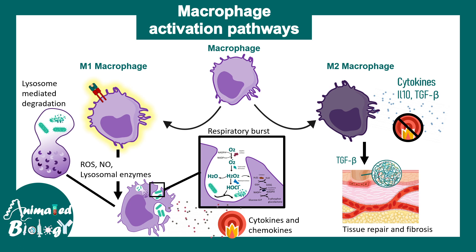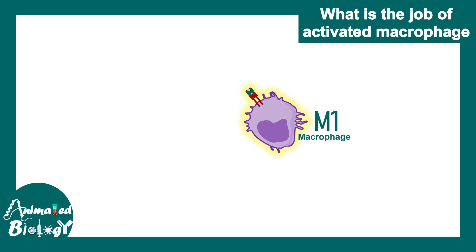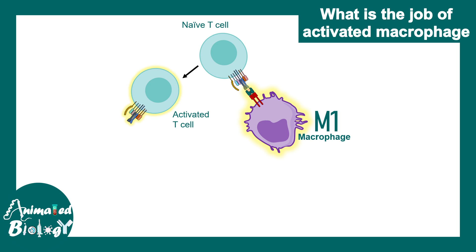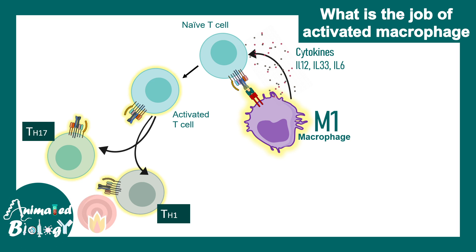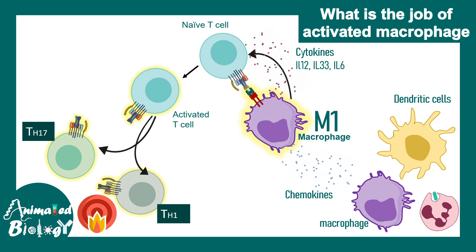M1 macrophages engulf and destroy pathogens via respiratory burst and lysosomal-mediated degradation, and secrete pro-inflammatory cytokines. M2 macrophages secrete anti-inflammatory cytokines and help in tissue repair and fibrosis. M1 macrophage is the central player in chronic inflammation: it presents antigen to naive T-cells, activates them, and secretes cytokines that polarize T-cells toward Th1 and Th17 subtypes. Th1-derived interferon-gamma then triggers further M1 macrophage differentiation, creating a vicious inflammatory loop sustaining chronic inflammation.